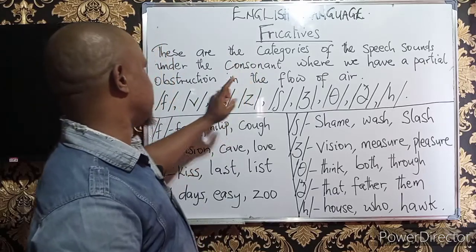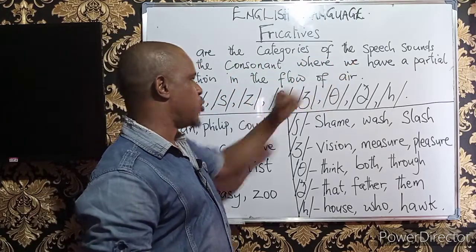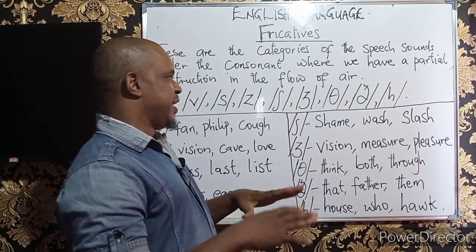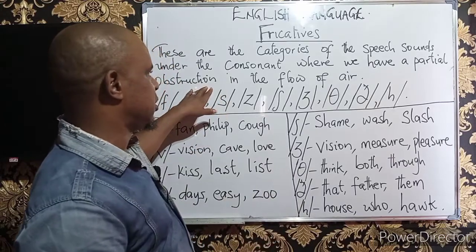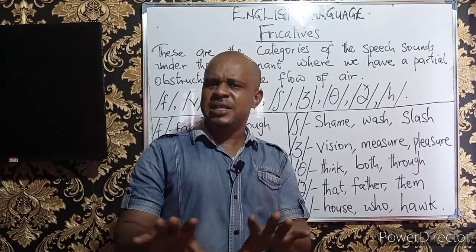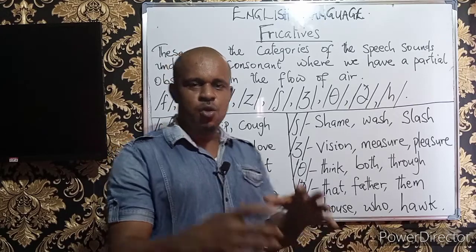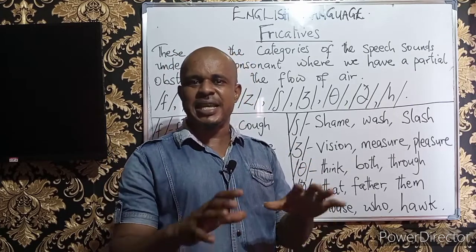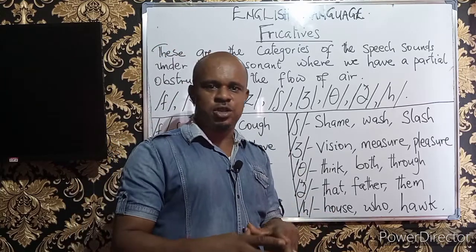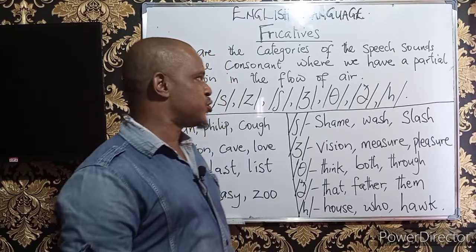For the fricatives, we need to understand that these are the categories of speech sounds under the consonants where we have a partial obstruction in the flow of air. Always remember that when we produce consonant sounds, we must notice a kind of obstruction in the flow of air. This obstruction can be total obstruction or partial obstruction.